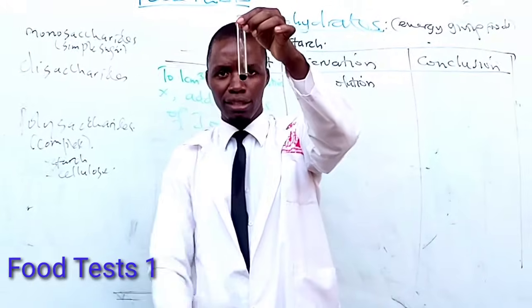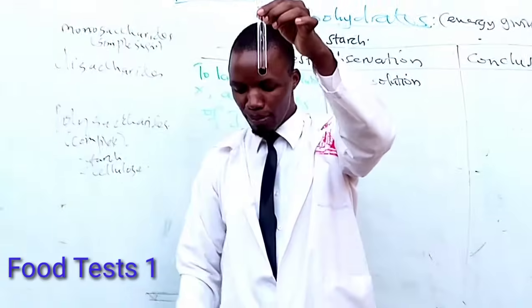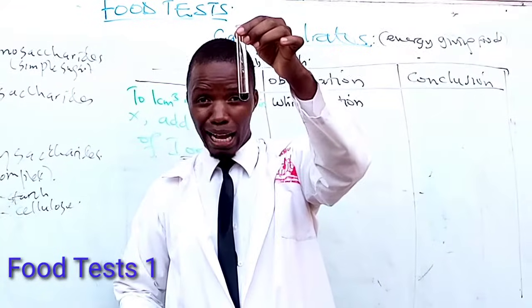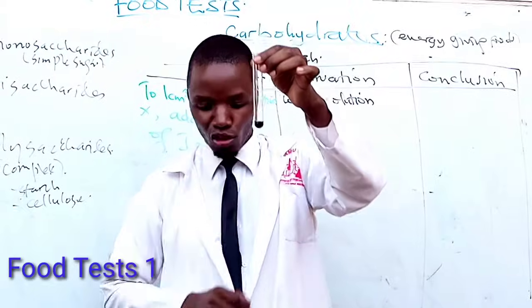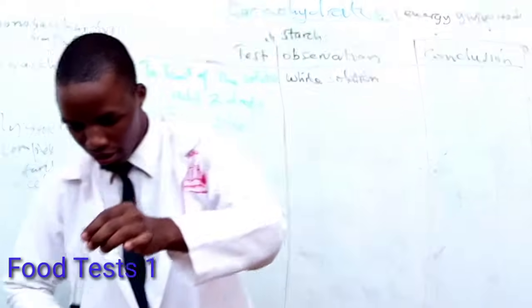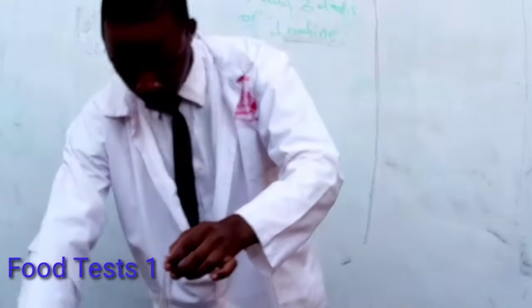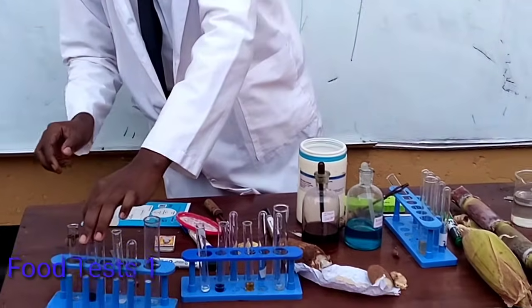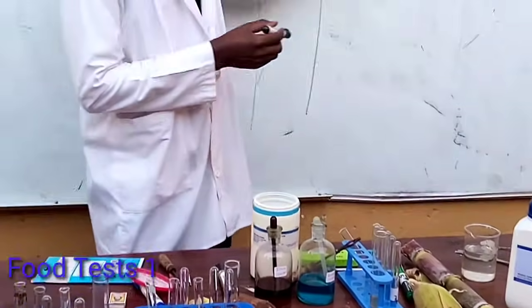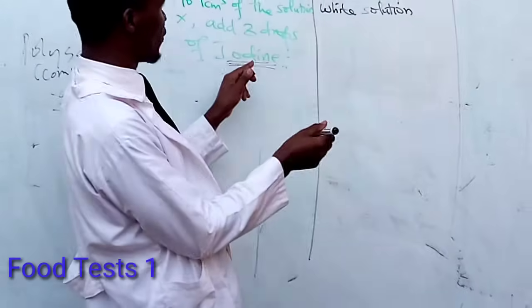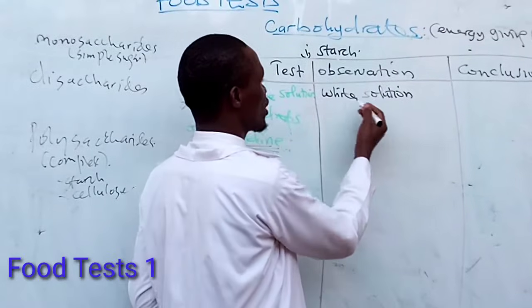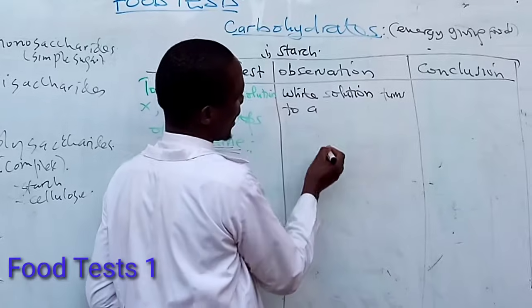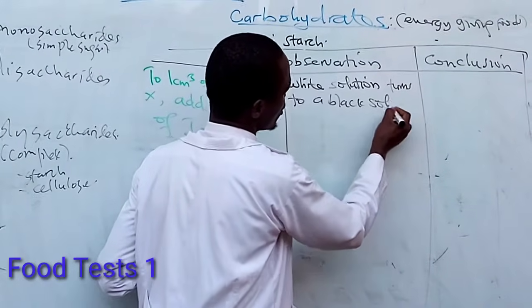I don't know what you are seeing there, but according to what I'm seeing here, I'm seeing something which is black — a black solution. So it means that when I have a white turbid solution and I add three drops of iodine, this white solution turns to a black solution.